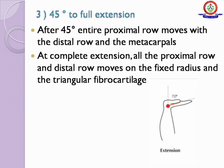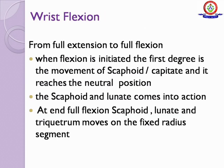From 45 degrees to full extension: after 45 degrees, the entire proximal row moves with the distal row and metacarpals. At complete extension, all the proximal row and distal row move on the fixed radius segment. For full extension to full flexion: when flexion is initiated, the first degree is the movement of scaphoid and capitate until it reaches neutral position. Then the scaphoid and lunate come into action, and at the end of full flexion, the scaphoid, lunate, and triquetrum move on the fixed radius segment.